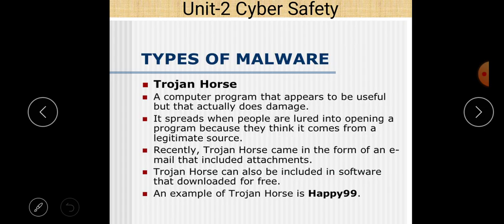To conclude: a Trojan horse is a computer program that appears to be useful but actually does damage. It spreads when people are lured into opening a program because they think it comes from a legitimate source. Recently, Trojan horses come in the form of emails with attachments, or they may be included in free software downloads. Examples of Trojan horses are Happy 99 and the 'I Love You' Trojan horse.